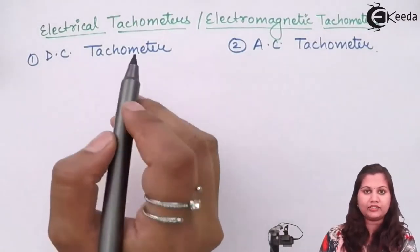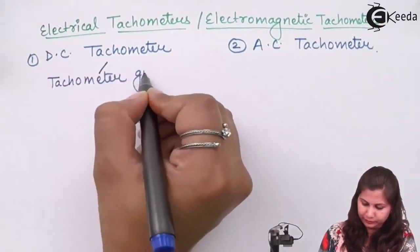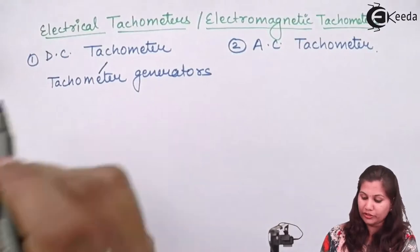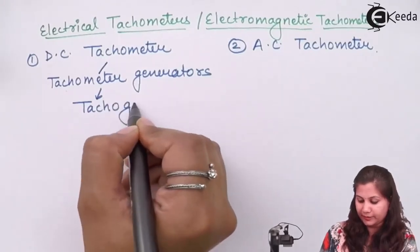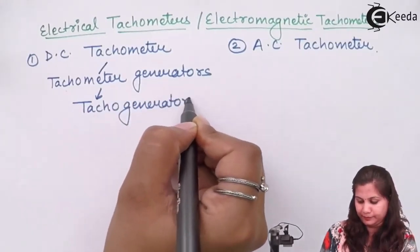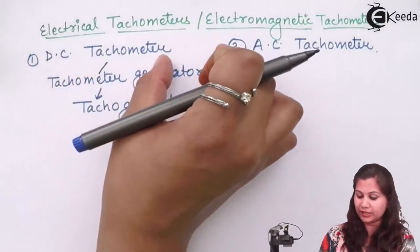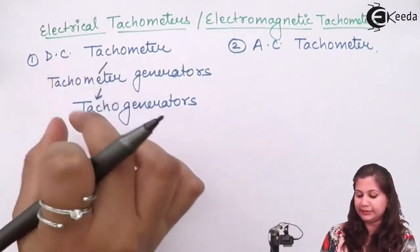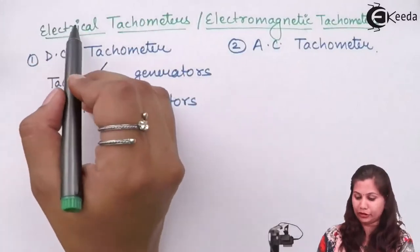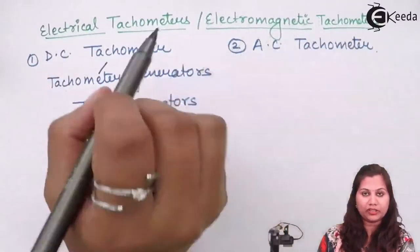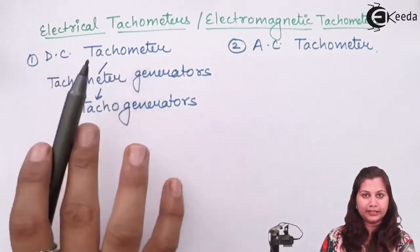These tachometers are generally tachometer generators. Instead of saying tachometer generators, they are called tacho generators. So there are two types of electrical or electromagnetic tachometer generators: DC tacho generators and AC tacho generators. First, we will study the DC tacho generator.